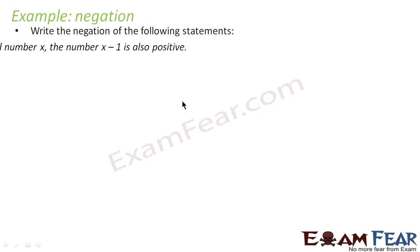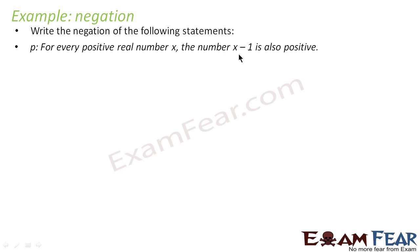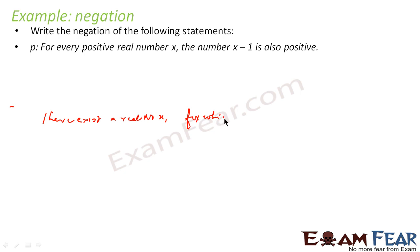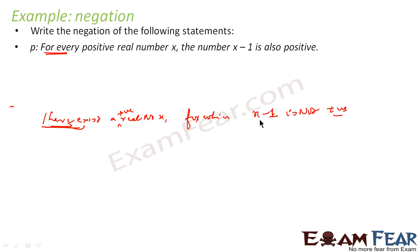We will take some examples of negation. Write the negation of the following statements. For every positive real number x, x minus 1 is also positive. When you want to write the negation of this statement, we have to say: there exists a positive real number x for which x minus 1 is not positive.